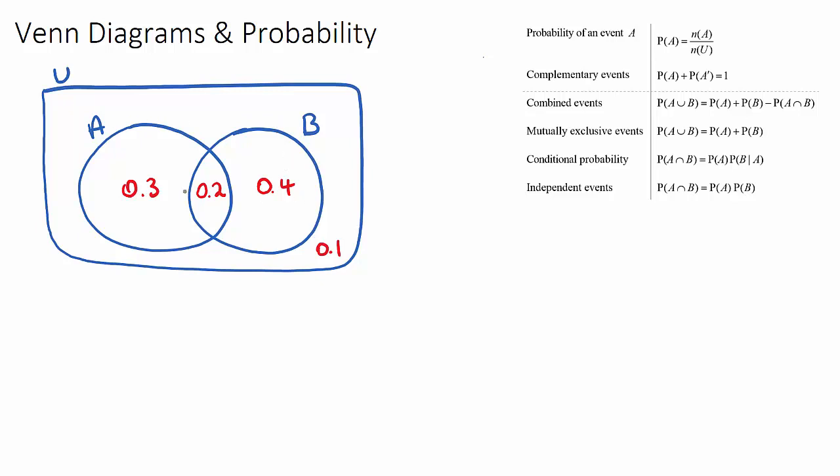Now these red numbers they are our probabilities and these need to add up to one. These need to add up to one inside of our sample space such that we have a proper Venn diagram question. So here are some formulas that are given in your formula booklet and we'll look at those as we go across.